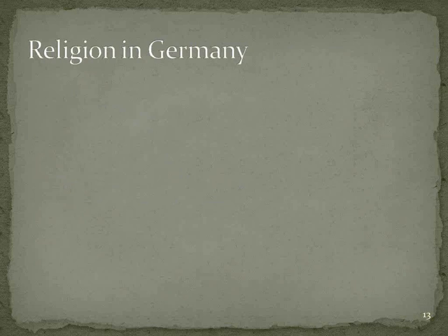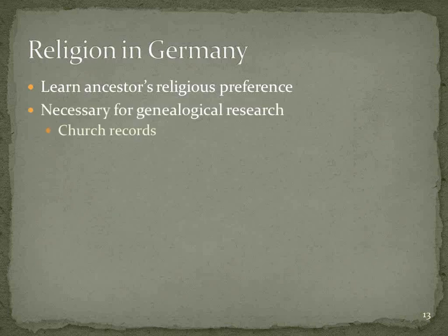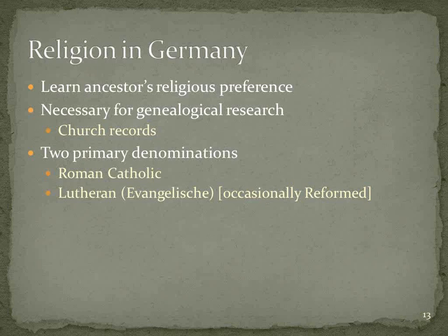You also want to learn about the religion of your family. The importance of learning the ancestors' religious preference is because when you get to searching in Germany, you'll be searching in church records primarily — they are the tool you're going to use for most of your German research. In most German-settled areas, there are two primary denominations: Germans tended to be either Roman Catholic or Lutheran, also called the Evangelische Kirche. Occasionally they were Reformed, depending on the preference of that particular state's prince or duke or king, which changed over time after the Reformation and Counter-Reformation.